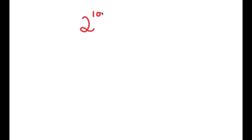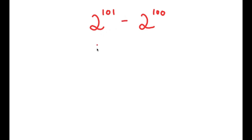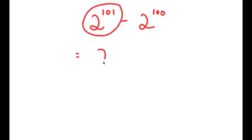In this video, I'm going to be solving the problem 2 to the power of 101 minus 2 to the power of 100. To solve this problem, I'm going to first start by rewriting 2 to the power of 101 as 2 to the power of 100 plus 1.